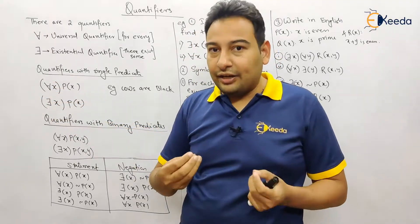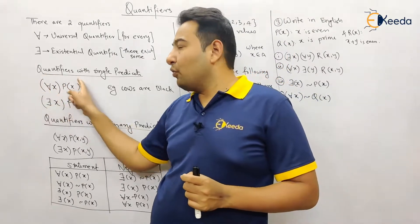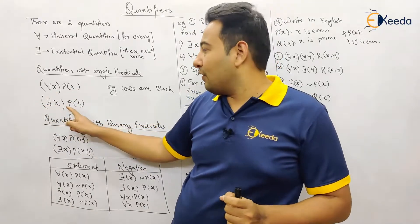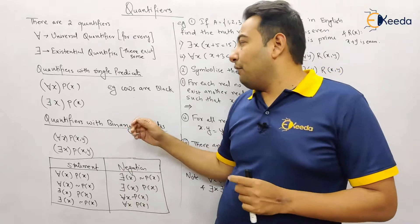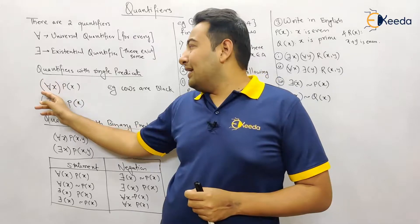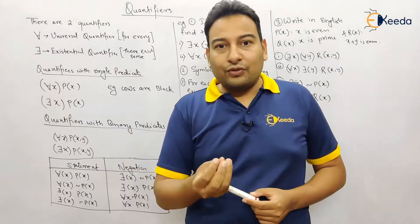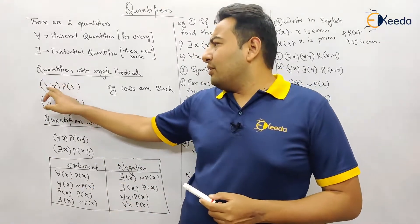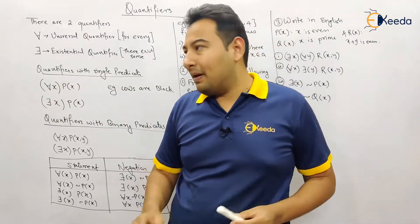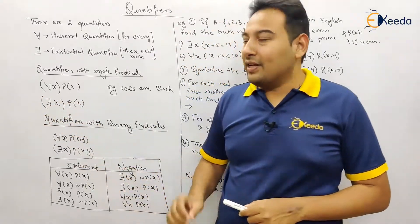These are written in a particular format. 'For every x, P(x) is true' is how we read the universal quantifier statement. 'There exists some x for which P(x) is true' is the existential form. For example, 'cows are black' in universal quantifier terms means 'all cows are black,' and existentially it means 'there exists some cows which are black.'